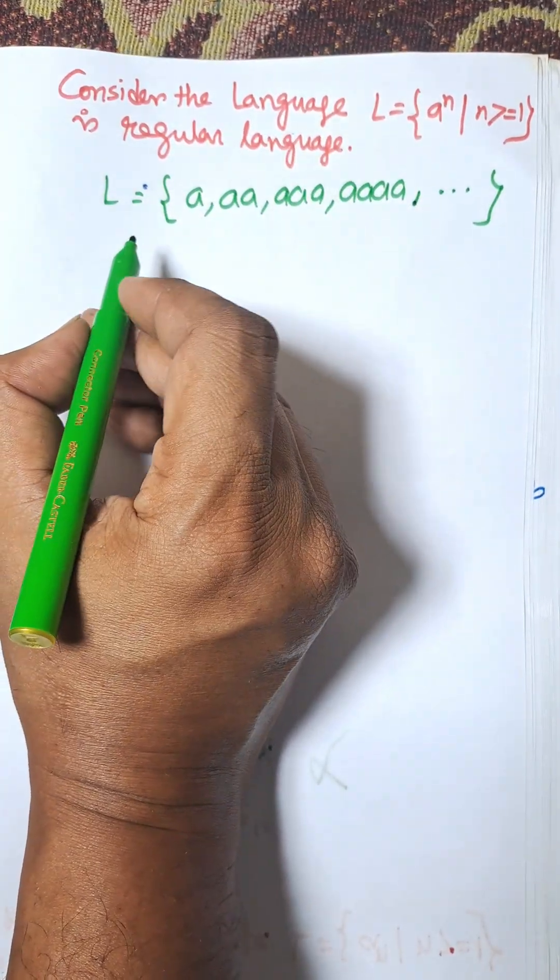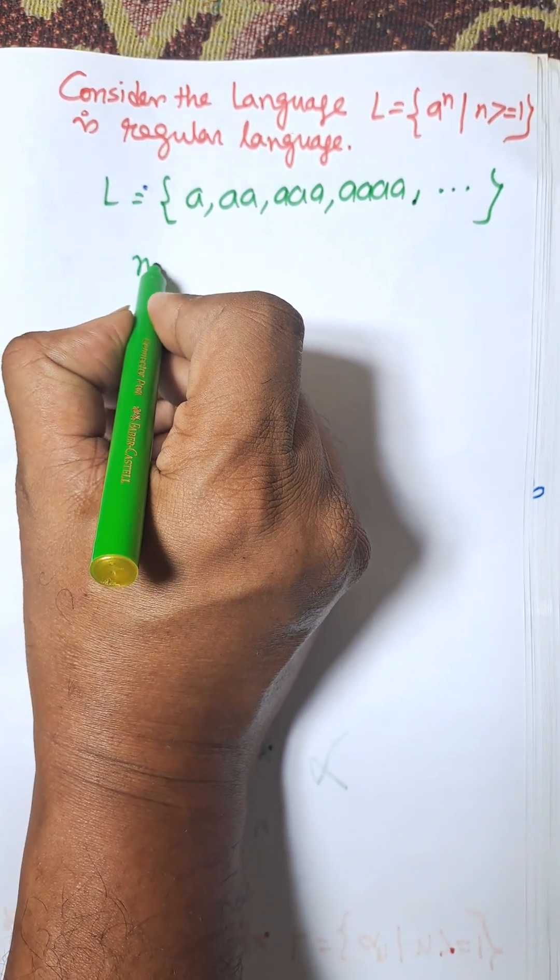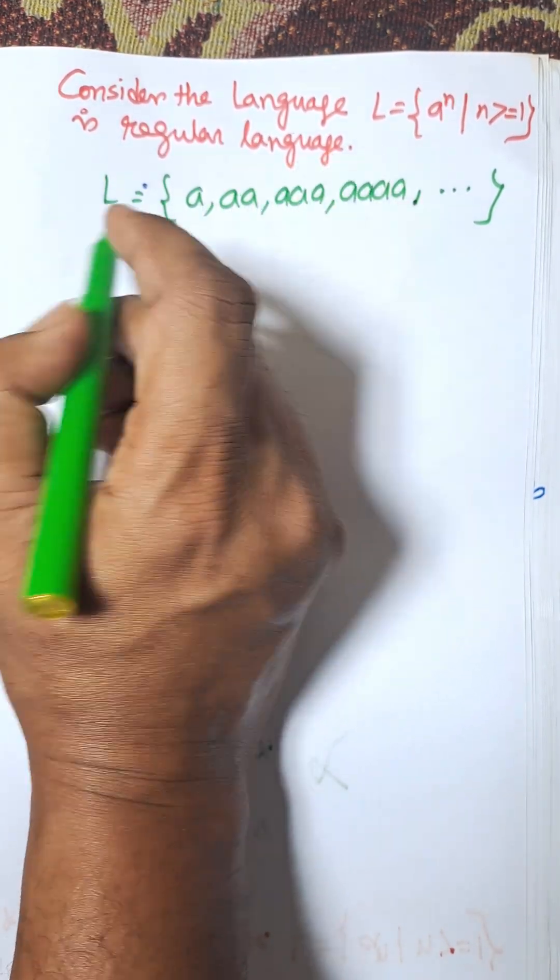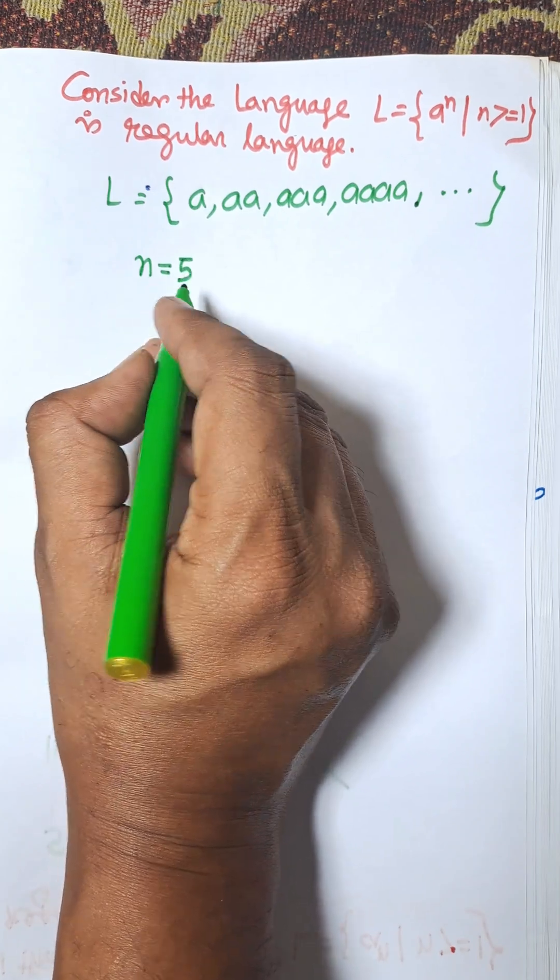Now, we need to find, suppose, n equal to 5. We can consider any value of n, considering here n = 5.